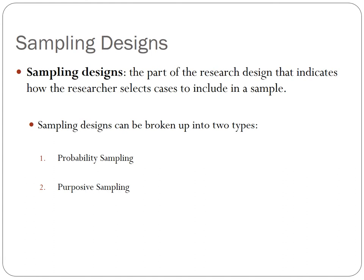Most research projects in social science have some sort of sampling design. A sampling design is the part of the research design that indicates how the researcher selects cases to include in a sample. It is always very important to be as explicit as you can be about your sampling design in write-ups of your research projects, since this gives readers a way to judge the validity of your knowledge claims. It is also very important to come up with a viable and valid sampling design before you start collecting data.